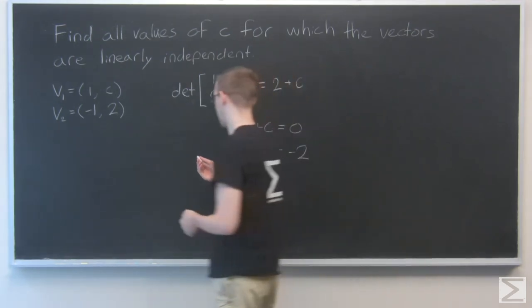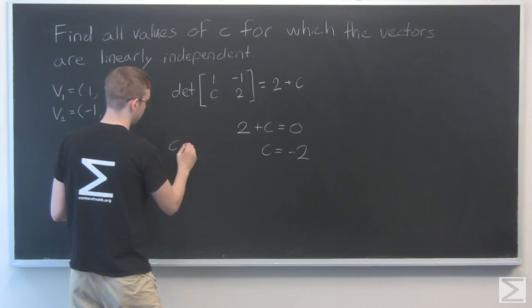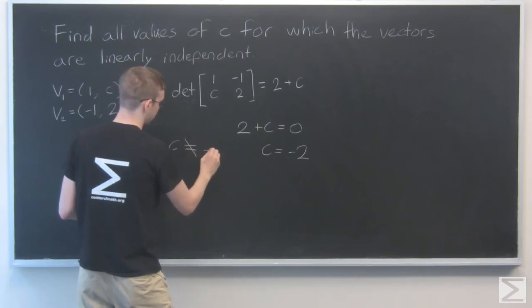So to answer the question, the values of C for which the vectors are linearly independent is when C is not equal to minus 2.